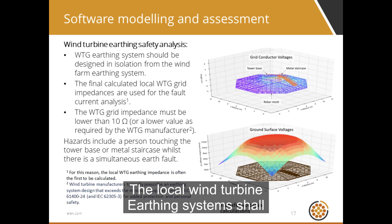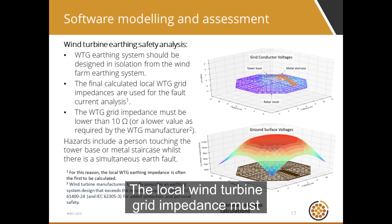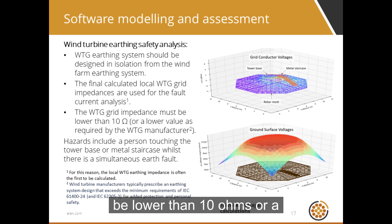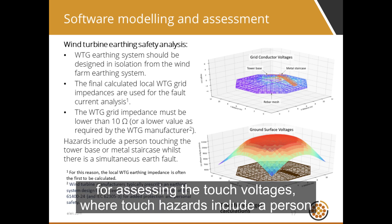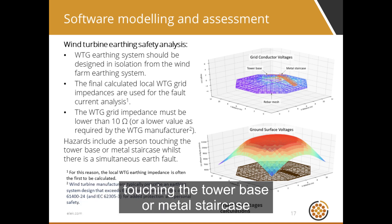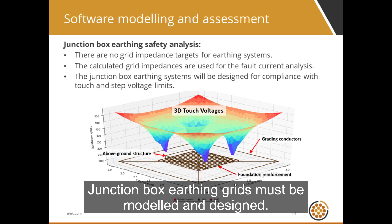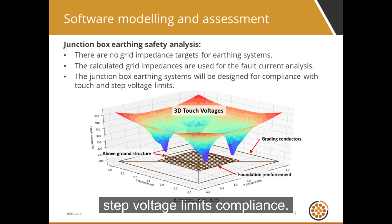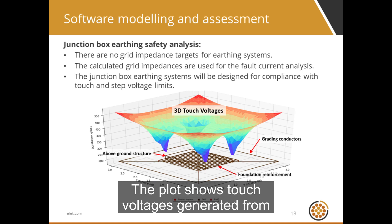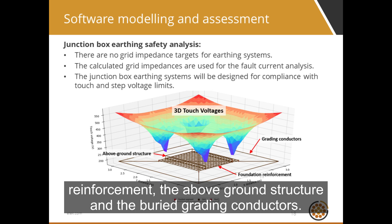The local wind turbine earthing systems shall also be designed in isolation from the interconnected wind farm earthing system. The fault current analysis uses the calculated local wind turbine grid impedances, which must be lower than 10 ohms or a lower value as the manufacturer requires. The worst-case fault currents are used for assessing touch voltages, where touch hazards include a person touching the tower base or metal staircase during a simultaneous earth fault. Junction box earthing grids must also be modeled and designed. While there are no grid impedance targets, safety must be assessed for touch-and-step voltage limits compliance. The plot shows touch voltages generated from a software model that includes the steel reinforcement, the above-ground structure, and the buried grading conductors.